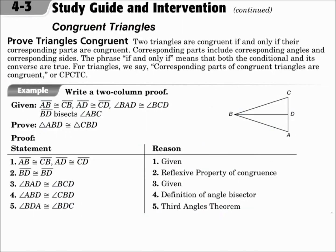To prove triangles are congruent, you need to show that all corresponding angle pairs are congruent and all corresponding side pairs are congruent. Notice the phrase 'if and only if,' which can be abbreviated IFF — that means both the conditional and the converse are true. For triangles, corresponding parts of congruent triangles are congruent, and that has the abbreviation CPCTC. Once you know that triangles are congruent, you know that all of their corresponding parts are congruent.